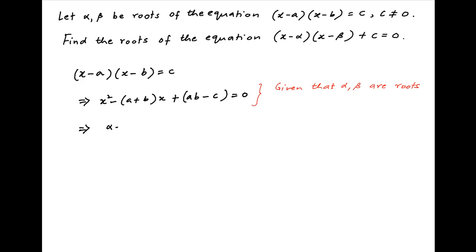Therefore, the sum of the roots alpha + beta is equal to a + b, and the product of the roots alpha·beta is equal to ab − c. Let's call this Result 1.